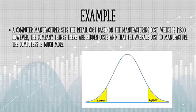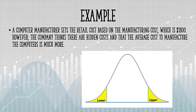Sometimes you'll be given a word problem, so let's work through this and see if we can figure out what kind of test it is. A computer manufacturer sets the retail cost based on manufacturing cost. The cost is $1,800. However, the company thinks there are hidden costs, and that the average cost to manufacture the computers is much more.